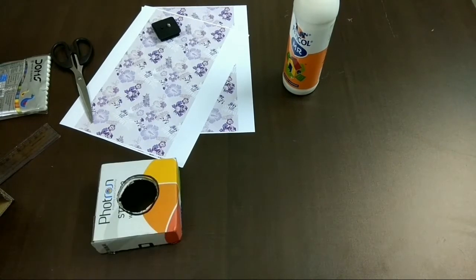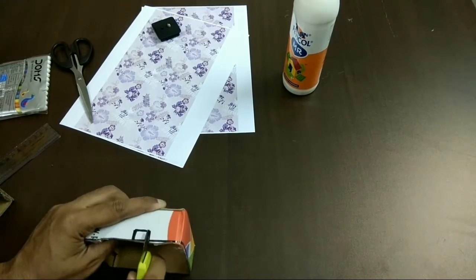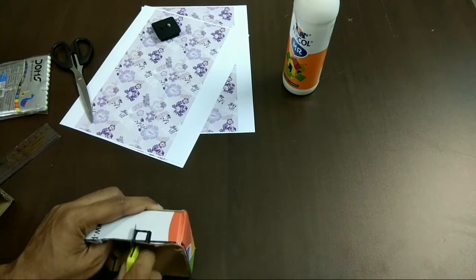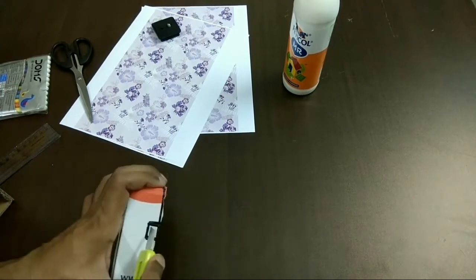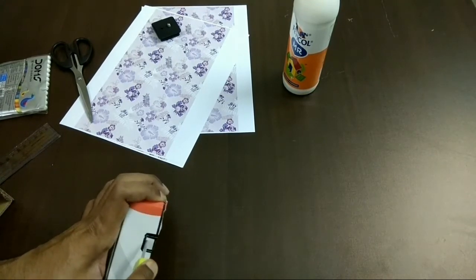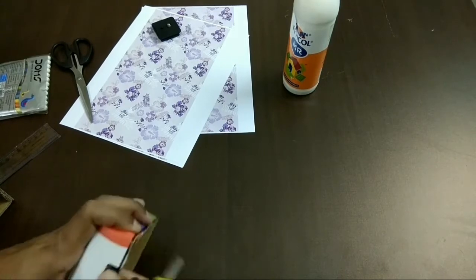Now you have to make one rectangular part and cut it out as shown in the video. This would serve as an opening for the wire to come out.